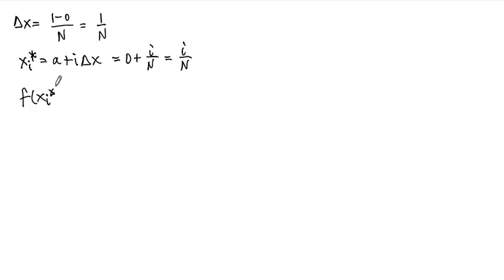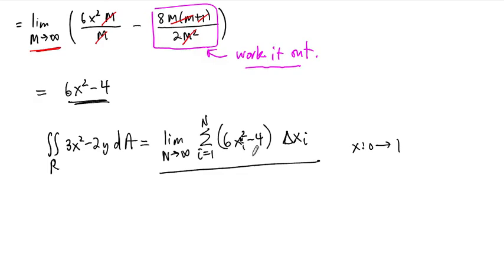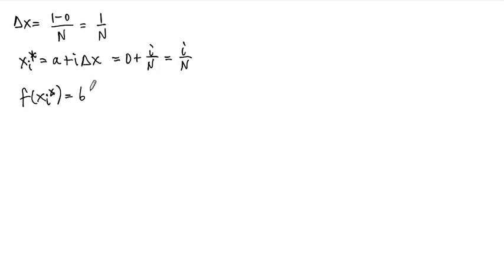So let me turn the page. Again, our delta x, we're going to choose this to be evenly spaced, so this will be 1 minus 0 over n, or just 1 over n, and we're going to choose our xi with a star to be a plus i times delta x, usual right-end point rule, and so again, since we go from 0 to 1, this is 0 plus i over n, or just i over n. This now needs to get plugged into our function, and our function after the first integral is this, 6x squared minus 4. So this becomes 6 times i over n quantity squared minus 4.